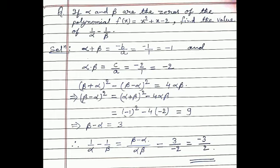We use the identity: (α + β)² - (β - α)² = 4αβ, which after simplification gives (β - α)² = (α + β)² - 4αβ. Putting in the values: (-1)² - 4×(-2) = 1 + 8 = 9. So (β - α)² = 9, which implies β - α = 3 (taking the positive value).